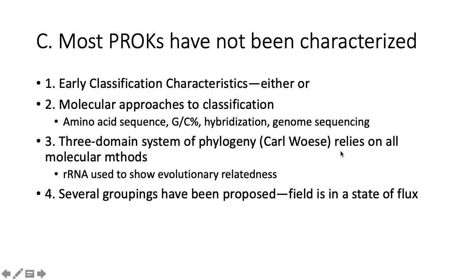Carl Woese in the late 1970s and 80s came up with a three-domain system based on molecular methods, mostly rRNA. They used rRNA to show evolutionary relationships between the three domains: bacteria, archaea, and eukarya.